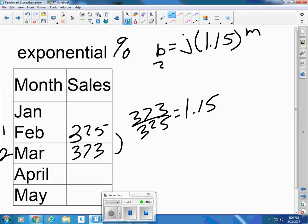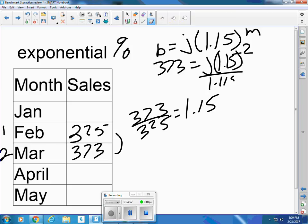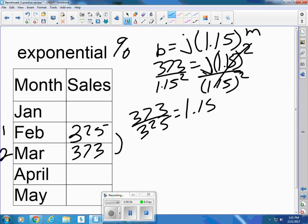So the number of boards is 373 equals j times 1.15, raised to the 2. So the opposite of multiplied by 1.15 squared is divided by 1.15 squared.